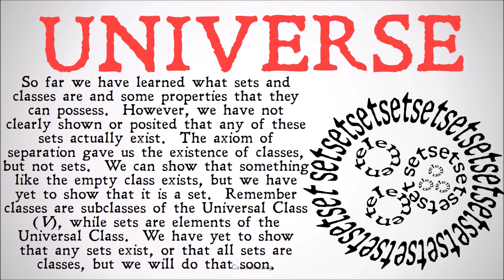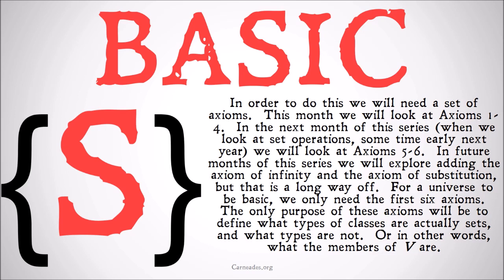We've been saying it a lot because we're going to prove it eventually and it's good to get it in your mind, but we haven't shown it, we haven't proven it yet, and we haven't found the axioms that will help us do it — but we will do that soon. In order to do that we will need a set of axioms. This month we're going to look at axioms 1 through 4. In the next month of the series, when we look at set operations — sometime early next year, I'm shooting for February — we'll look at axioms 5 through 6. In future months we might explore adding the axiom of infinity or the axiom of substitution, but that's a long way off. For a basic universe, the only thing we need are the first six axioms.